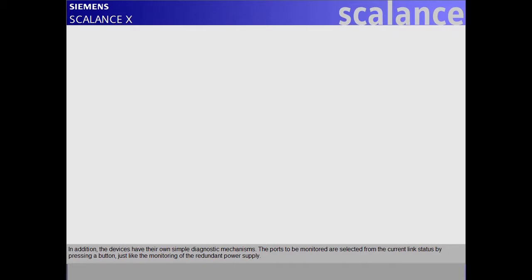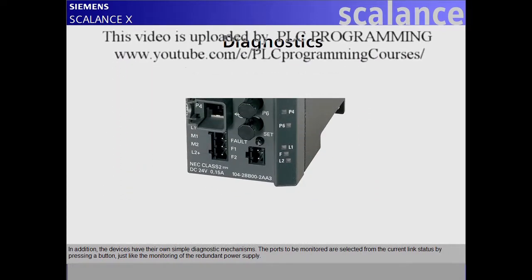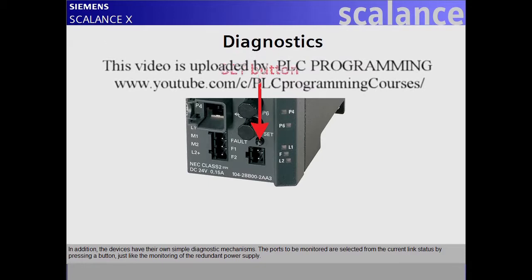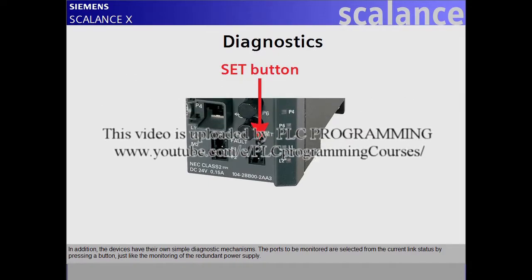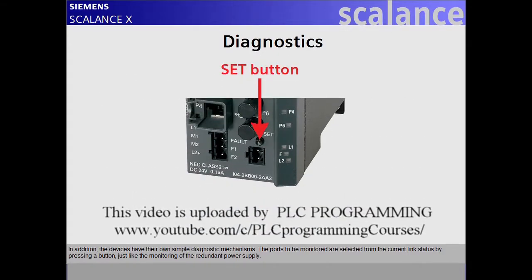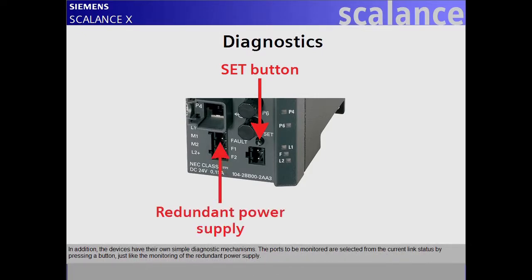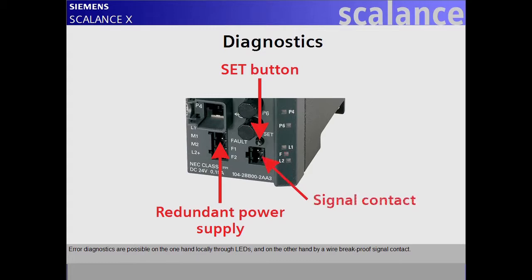In addition, the devices have their own simple diagnostic mechanisms. The ports to be monitored are selected from the current link status by pressing a button, just like the monitoring of the redundant power supply. Error diagnostics are possible locally through LEDs and on the other hand by a wire break-proof signal contact.